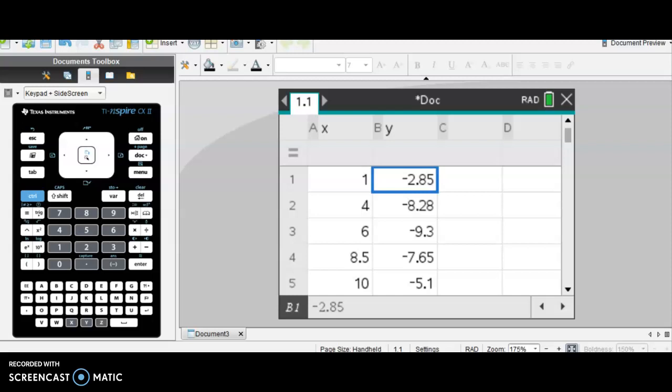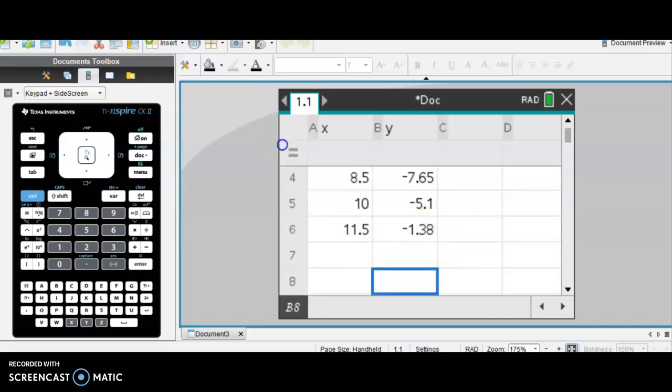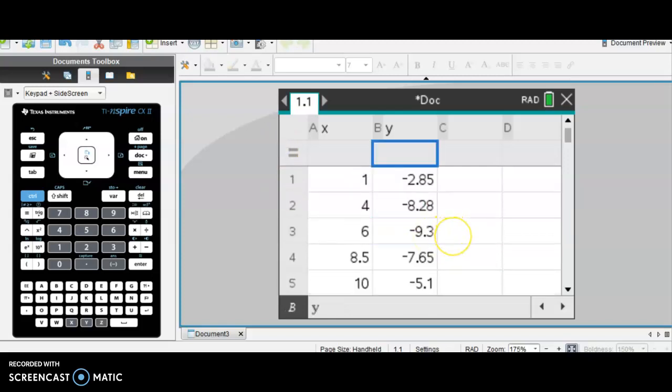Also note that this data goes along really well with the scenario that they gave us. This is a person diving into a pool. So you can see here at time one second, he is 2.85 feet below the water. Negative means below, right? And you can see he's getting deeper and deeper. And then he starts coming back up to the surface. He's barely below the water and about to resurface after he's dived into the pool.